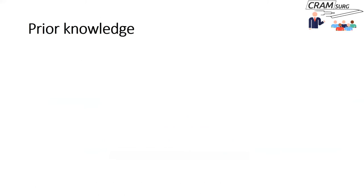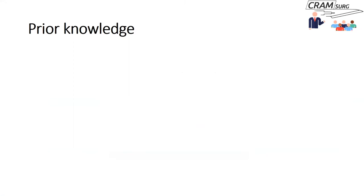We're going to talk about multiple testing. Previously we talked about p-values and confidence intervals, so I'll briefly recap that discussion, but if you did want to go back and listen to that talk, this might then make more sense. A p-value refers to the probability of getting a result at least as extreme as what is observed if your null hypothesis is true. And 95% confidence intervals refers to the interval or range within which the effect size is likely to lie in 95% of similar studies.